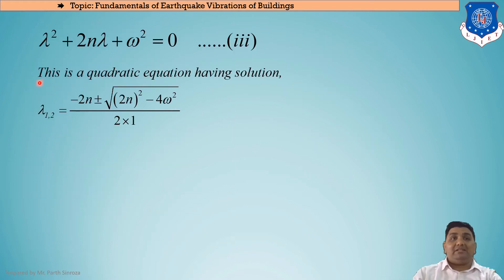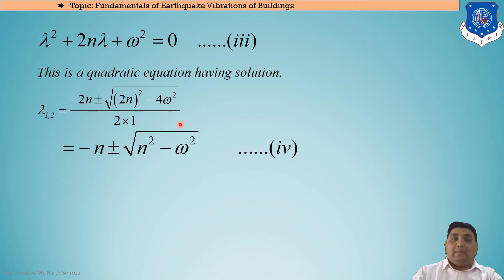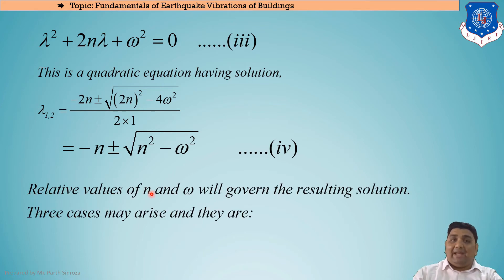This is a quadratic equation, so the roots λ₁,₂ are: λ₁,₂ = (-2n ± √(4n² - 4ω²)) / 2. Simplifying, the 2 cancels, giving λ₁,₂ = -n ± √(n² - ω²). This value of λ will depend on the relative values of n and ω, which will govern the resulting solution.